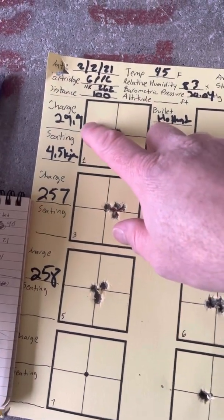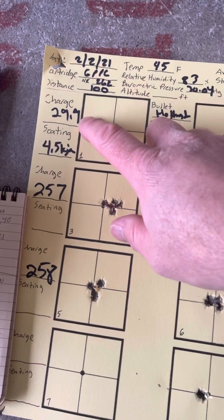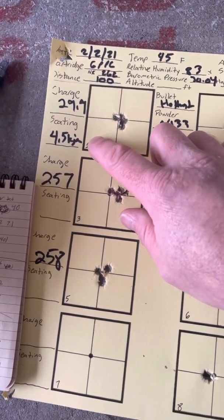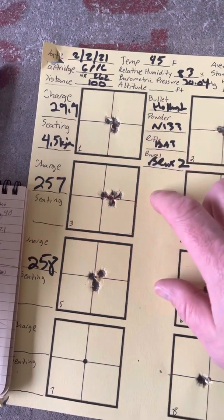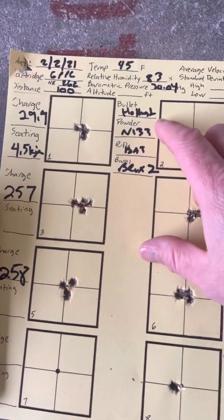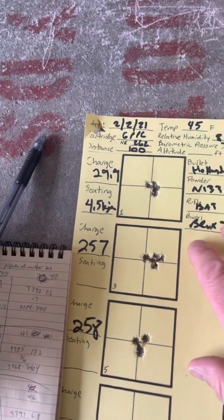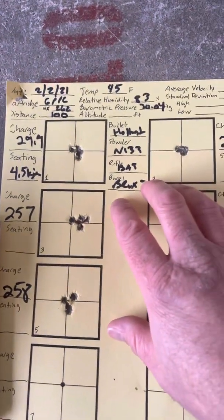The data tells us that 29.9 of N133 is the charge to use in this type of weather. We seated it at about four and a half thousandths jam using the Hondenstein bullet, and then our bat action, bat nouveau. Same barrel and everything else that we do the other testing with.